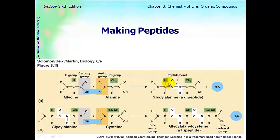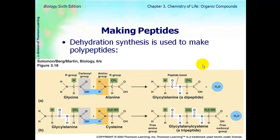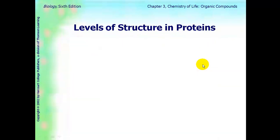If you have one peptide bond, then you made a di-peptide. If you have two peptide bonds, then you have a tri-peptide. If you have more than two peptide bonds, then you have a polypeptide. And this is all done by dehydration synthesis.